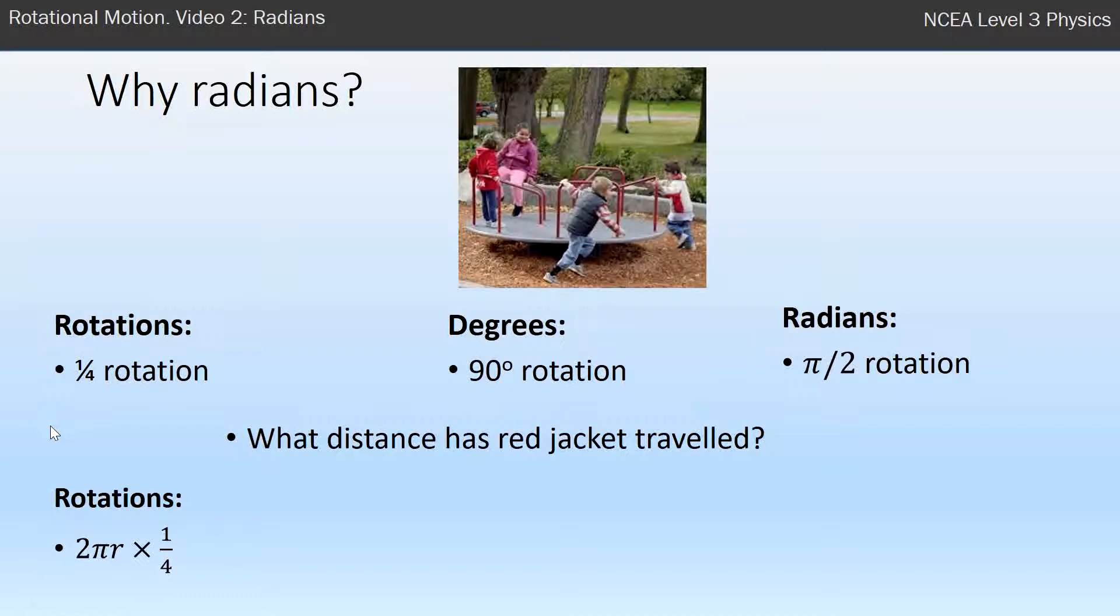If we were dealing with degrees, we'd do the same thing in that we'd say, well, a full circle is 2πr. That's the circumference of a circle. And then we'd times this by 90 degrees, that's how much she's gone around, divided by 360, because that's as a fraction of a full circle. So 90 over 360, hopefully you'll recognize as equivalent to one over four.